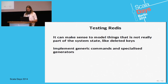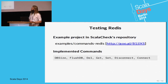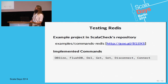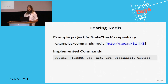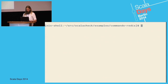I only showed the delete and get commands, but I have an implementation that tests several different Redis commands, and it's available as an example in the ScalaCheck repository. I can actually run it — it's not that exciting since it basically won't output much.